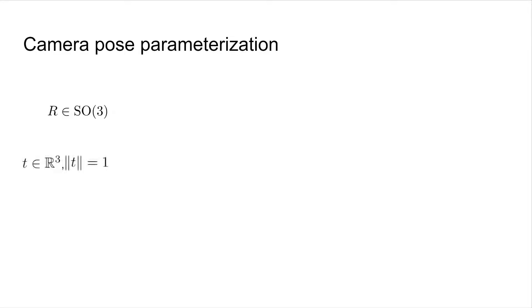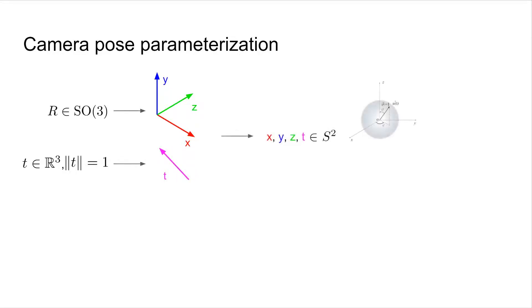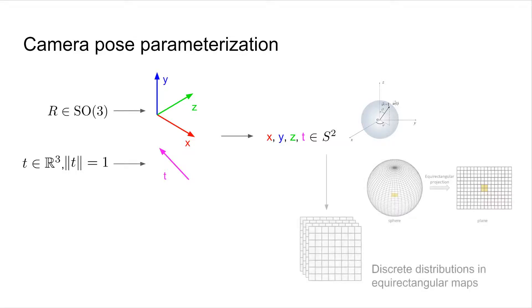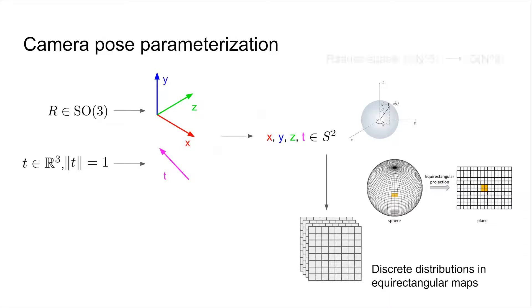The camera pose consists of a 3D rotation, which is an SO(3) matrix, and a 3D translation, which is up to scale, so we normalize it to a unit vector. We observe that the rotation matrix can be split into its orthogonal basis vectors, which are unit vectors same as the translation. Then we can simplify the high dimensional pose space into four unit vectors or directions. Since 3D directions lie on the unit sphere, we can estimate the pose using spherical distributions, making the computation tractable.